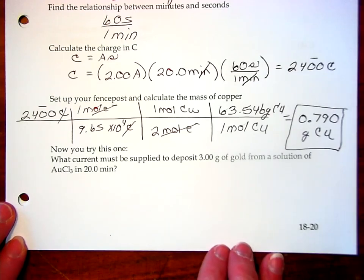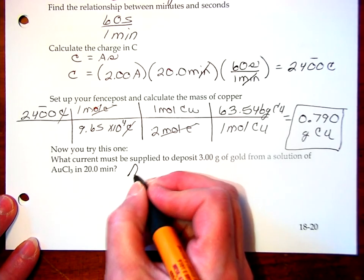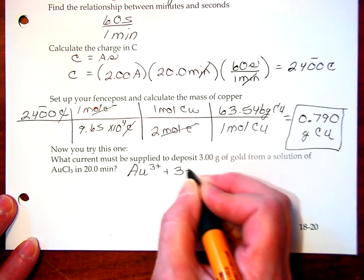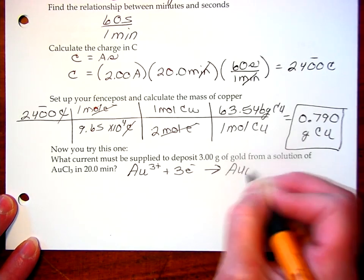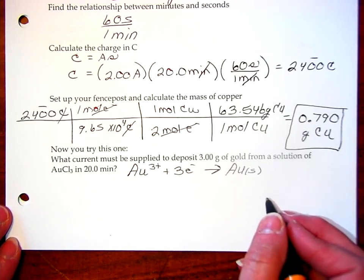So, the solution to this problem: we know that we have gold 3 chloride. So, I have a gold 3 ion in solution. It will pick up 3 electrons to get reduced and make gold metal. This time, I'm trying to find the current. So, I have to kind of go backwards.